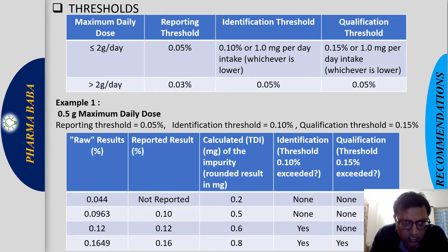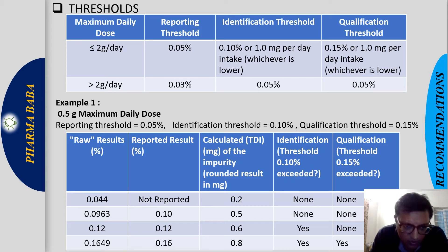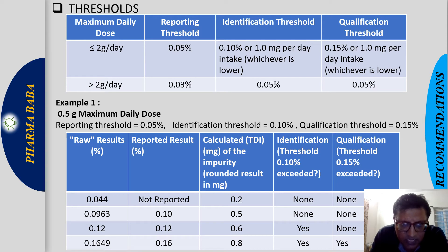Let's work through a practical example. Maximum daily dose is 0.5 grams per day. Raw results are: 0.044, 0.0963, 0.12, 0.16 — all expressed as percentages. Rounded to two decimal places: 0.04, 0.10, 0.12, 0.16. Since 0.5 grams falls in the ≤2 grams per day category, reporting threshold is 0.05%. The first impurity at 0.04% is below the reporting threshold — not reported. The second at 0.10%, third at 0.12%, and fourth at 0.16% are all above 0.05% and will be reported.